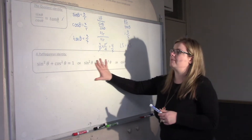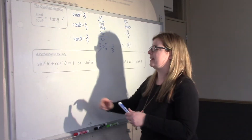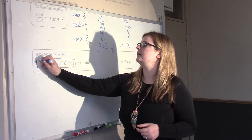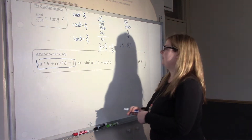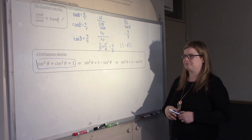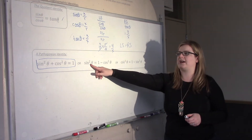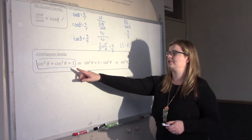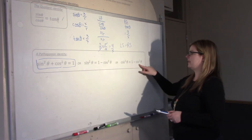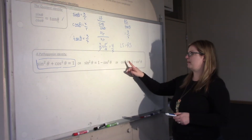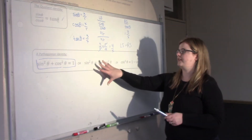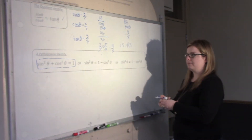This is called a Pythagorean identity — this is really the main one we're going to prove. These two are just different rearrangements of that main identity. Here we just isolated for sin²θ by moving the cos²θ over, and here we isolated cos²θ by moving the sin²θ over. So this is the main one, and you get these two just by rearranging it.